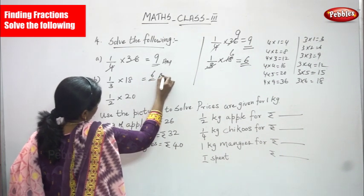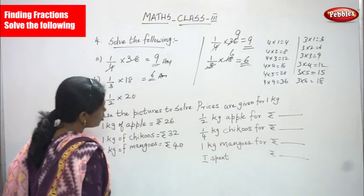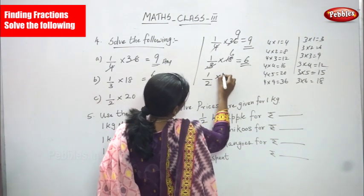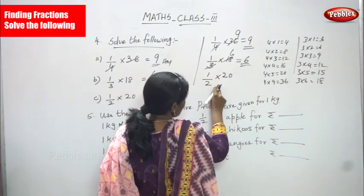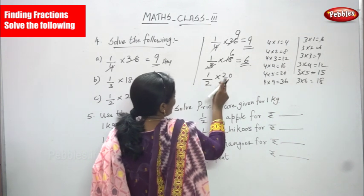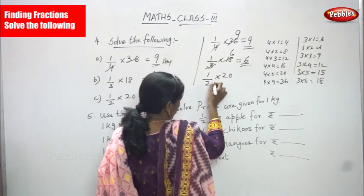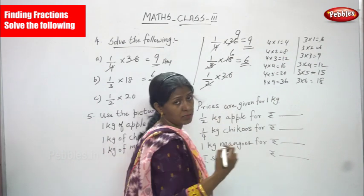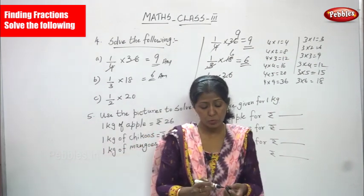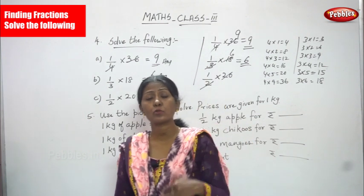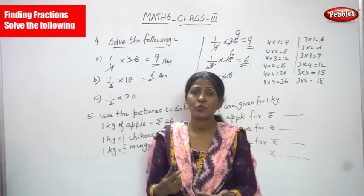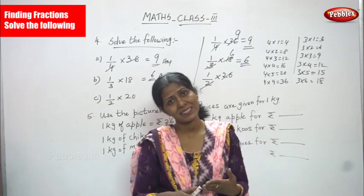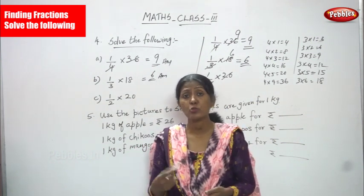The third sum: 1/2 × 20, that is half of 20. 20 is going to be cancelled by 2. Using the 2 table: 2 1's are 2, 2 2's are 4, 2 3's are 6, 2 4's are 8, 2 5's are 10, 2 6's are 12, 2 7's are 14, 2 8's are 16, 2 9's are 18.